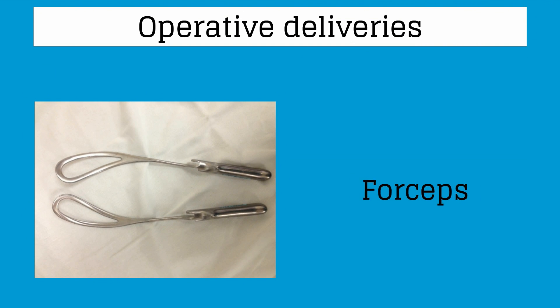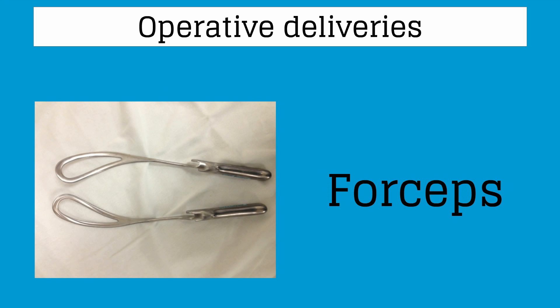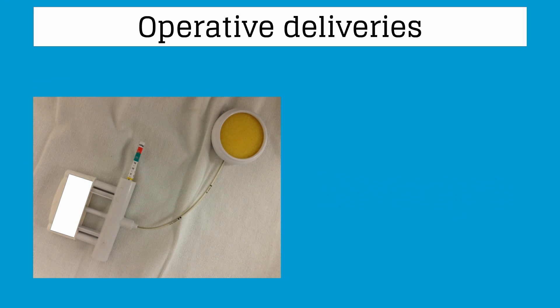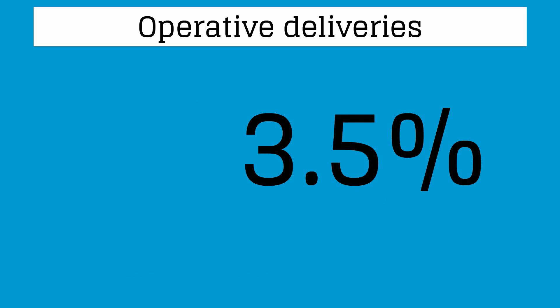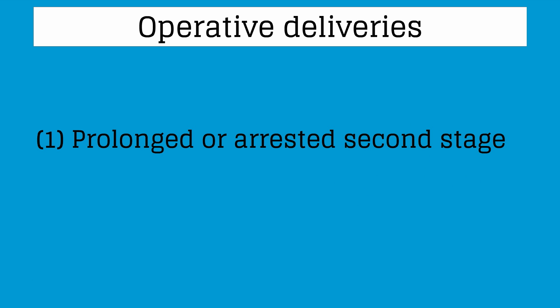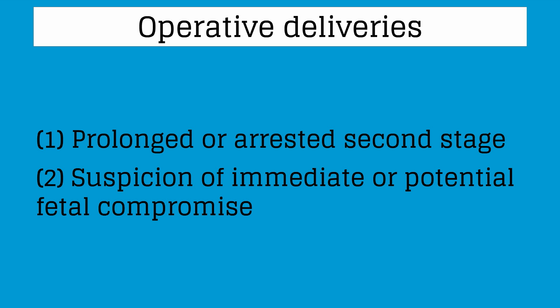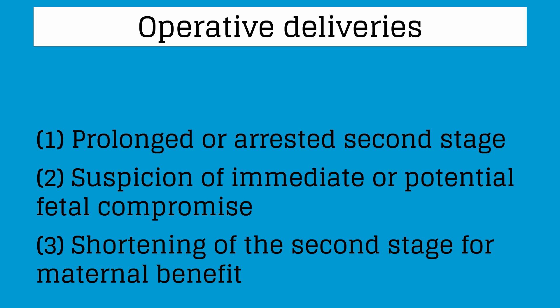Operative deliveries are accomplished by applying direct traction to the fetal skull with forceps, or by applying traction to the fetal scalp with a vacuum extractor. The incidence of operative vaginal delivery in the United States is approximately 3.5%. General indications are: 1. prolonged or arrested second stage; 2. suspicion of immediate or potential fetal compromise; 3. shortening of the second stage for maternal benefit.